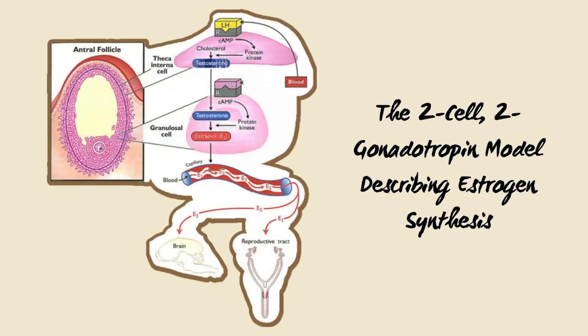During follicular development, LH binds to LH-specific membrane receptors located on the cells of the theca interna of the developing follicle. The net effect is conversion of cholesterol to testosterone. Testosterone then diffuses out of the theca interna cells and enters the granulosa cells. The granulosa cells contain receptors for FSH; when FSH binds to its receptor, it causes the conversion of testosterone to estradiol. This two-cell, two-gonadotropin pathway continues to function until levels of estrogen increase to a threshold that induces the pre-ovulatory LH surge.